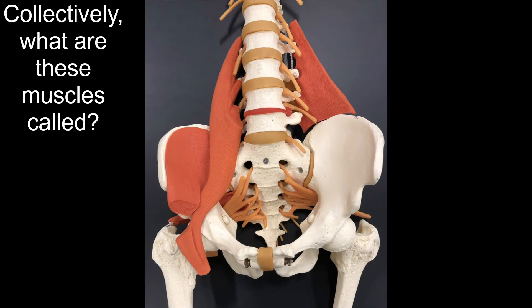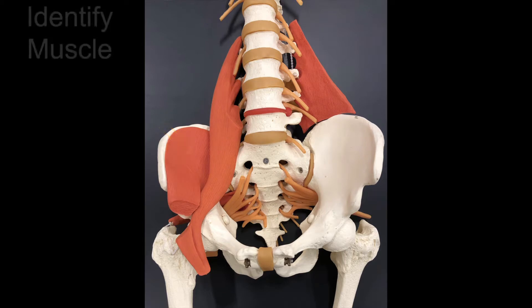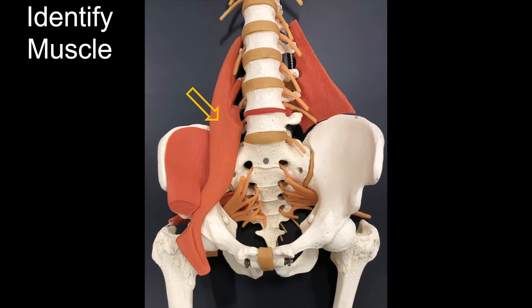Collectively, what are these muscles called? Iliopsoas. Identify the muscle: Iliacus. Identify the muscle: Psoas Major.